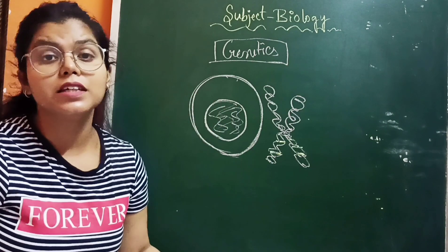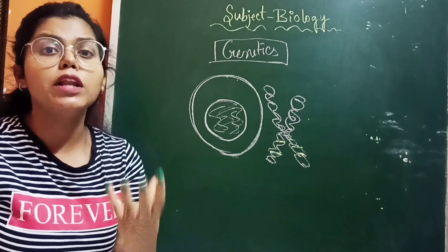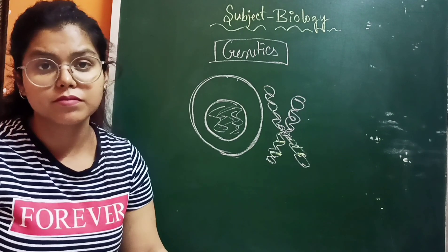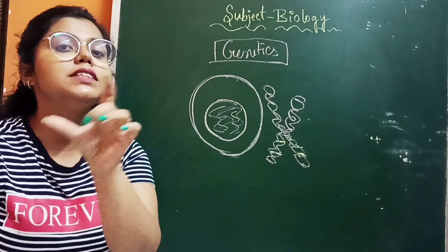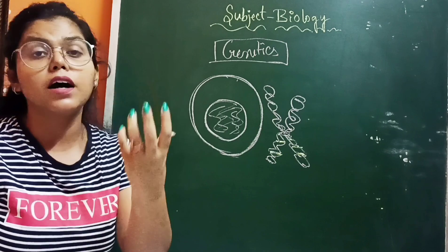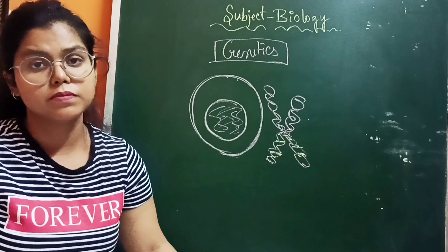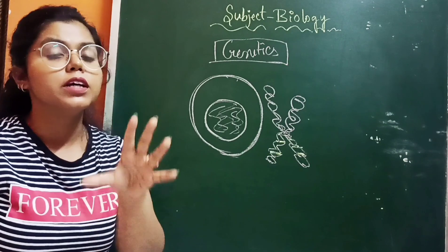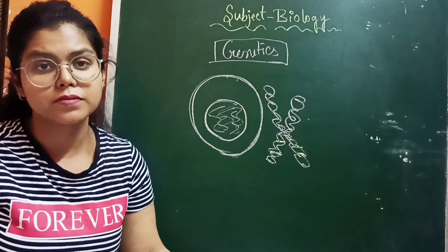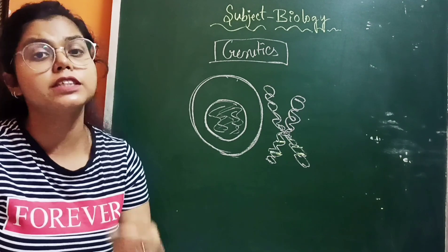Gene is also important to evaluate our evolution. The gene always tells us about our evolutionary aspect — our evolutionary involvement from a particular organism. There are also different types of genetics: evolutionary genetics, molecular genetics, and classical genetics.